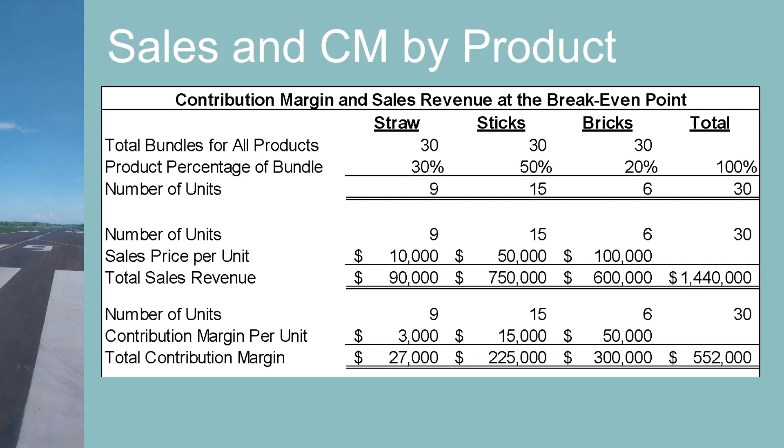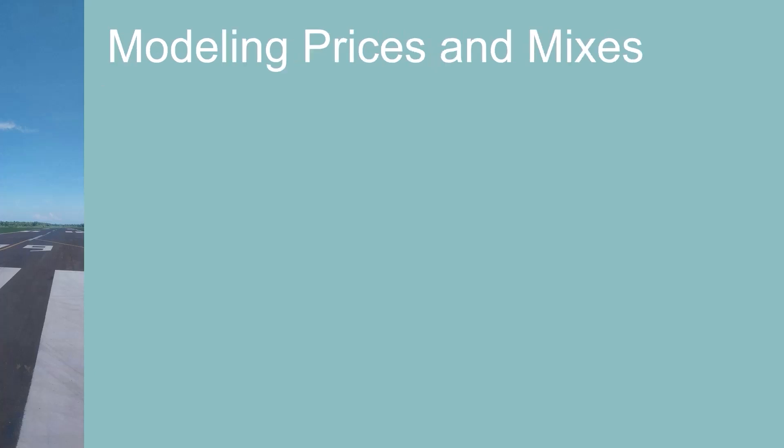Now let's translate that to sales. This table shows the process: first, we calculate how many units of each product are sold in 30 bundles. We then multiply the number of units of each product by their sales price to get sales revenue. I also multiplied each product's units by its contribution margin to show that the total equals the $552,000 calculated earlier — exactly offsetting their fixed costs for a profit of zero.